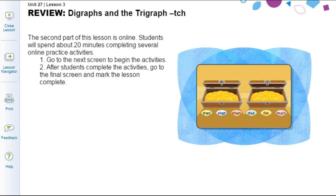When you finish the offline activities, be sure to open up the lesson and complete the online review for digraphs and the trigraph TCH. When you've completed all of your activities, mark the lesson as complete, enter your attendance, and don't forget to fill out the attendance survey.